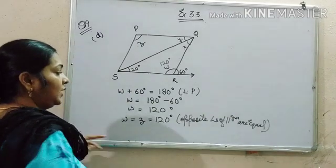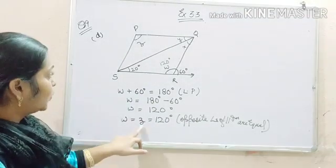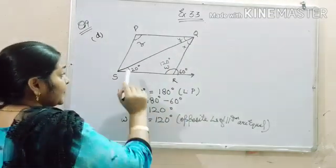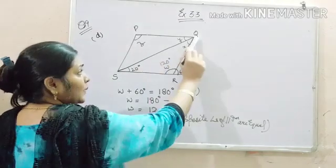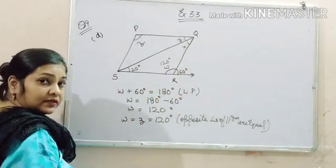That's why we get W is equal to 120 degree equal to z. Now the rest two unknown quantities are x and y. You can see that these are two parallel lines and this is a transversal.